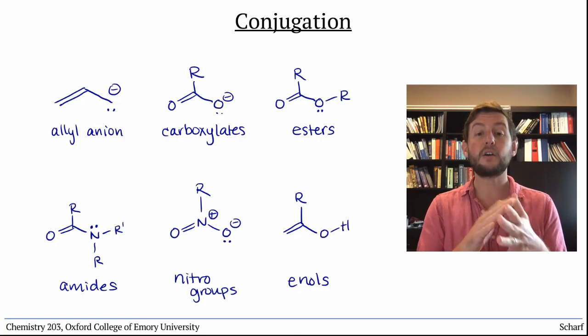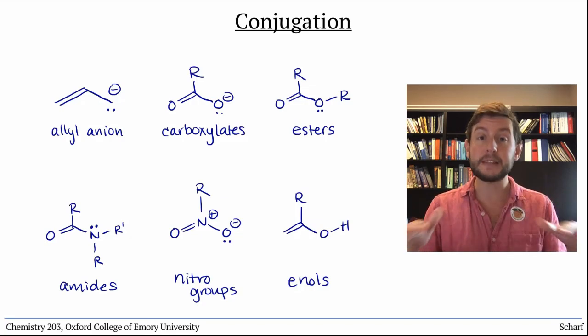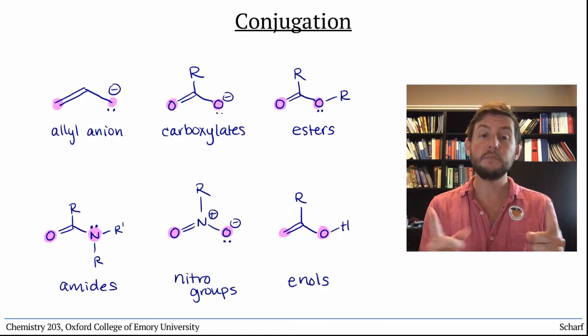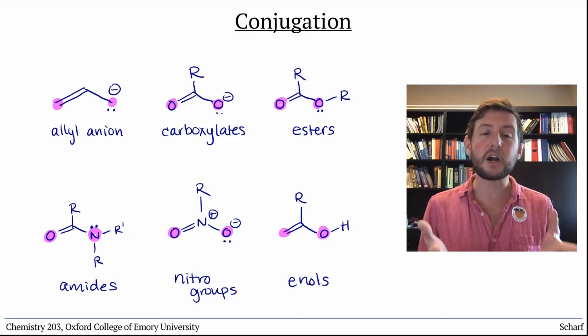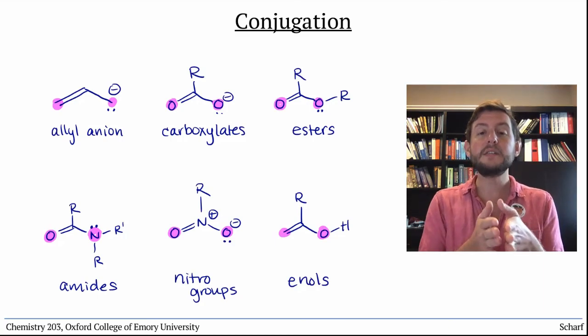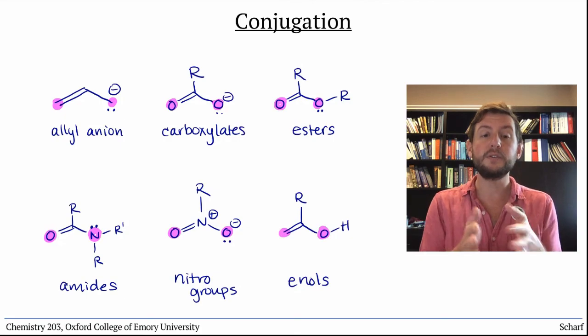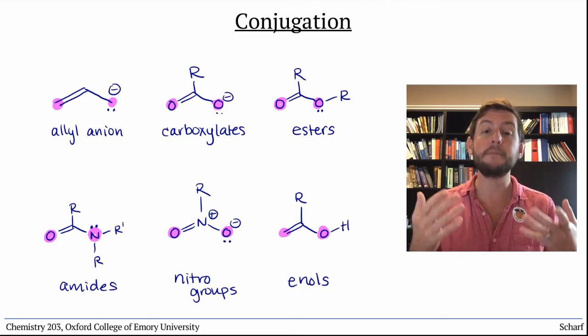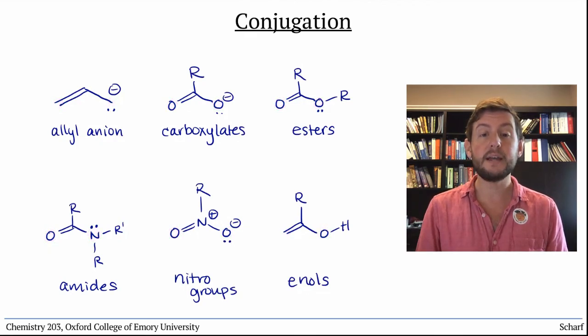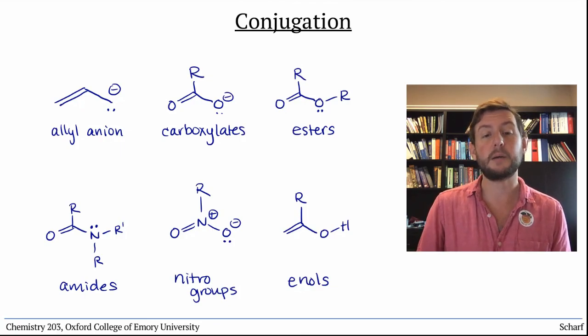Their HOMOs are delocalized, spread out between the two atoms at the ends of the conjugated system. That's the thing about conjugated systems. Because their frontier molecular orbitals are spread out, they can potentially react at multiple atoms. This makes their reactivity somewhat more complex than non-conjugated systems, and we'll be exploring that reactivity in the upcoming classes.